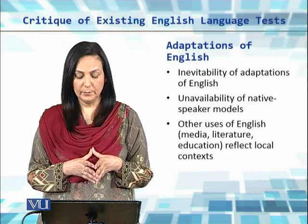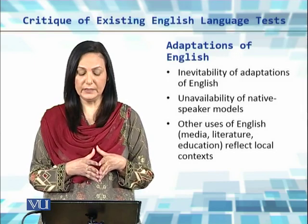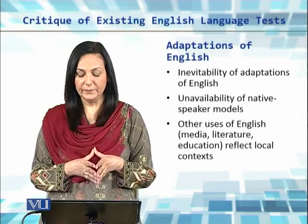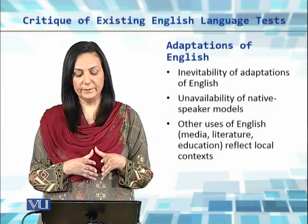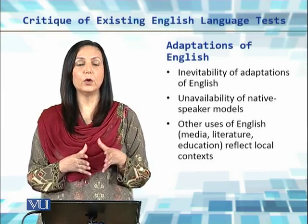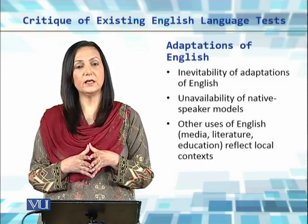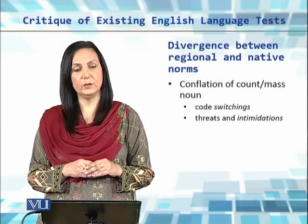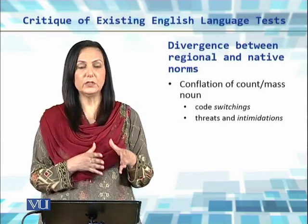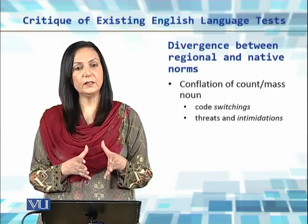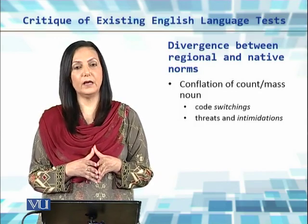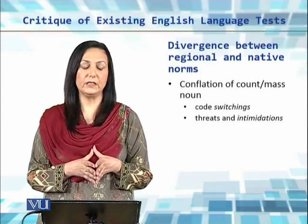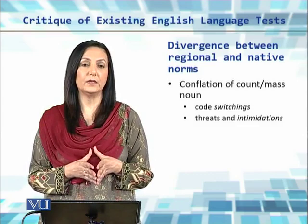There are several constraints which make it impossible. There are also other uses of English — in media, literature, and education in outer and expanding circle countries — and they all reflect the local context. The use of English in all these domains in non-native English speaking countries reflects the native context and not the English context. Because of this, we see a lot of divergence between regional and native varieties of English. One area of divergence is the conflation of count and mass nouns — countable and uncountable nouns. In non-native varieties of English, we have phrases like 'code-switchings,' whereas a native speaker would never really use this phrase.